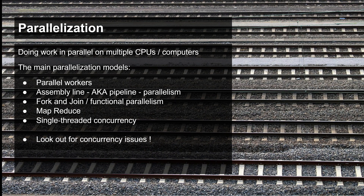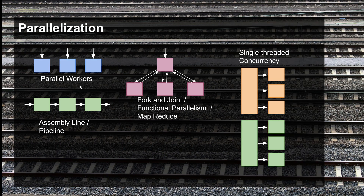The eighth principle is parallelization — doing work in parallel on multiple CPUs or computers so you can get more work done at the same time. The main parallelization models are parallel workers, assembly line (also known as pipeline parallelism), fork and join or functional parallelism, MapReduce, and single-threaded concurrency, which is not truly parallelism but can be used for it. Watch out for concurrency issues when using these models. In the parallel workers model, each worker — a thread or process — gets a task and completes it independently with no communication between workers.